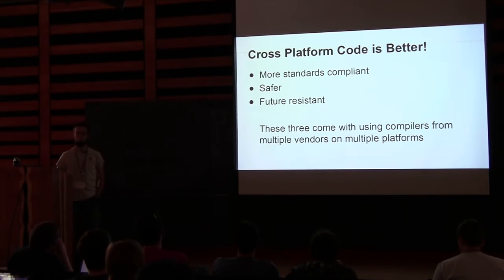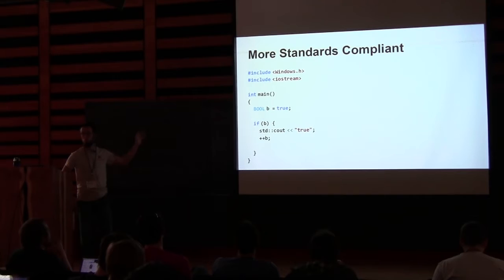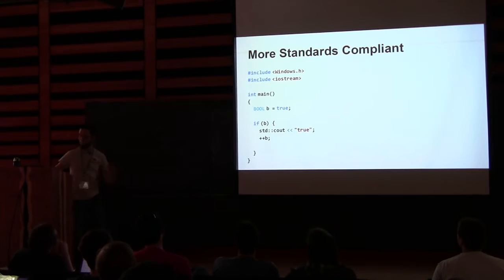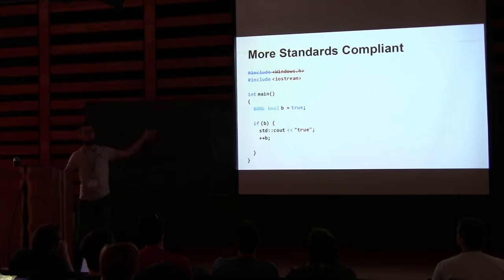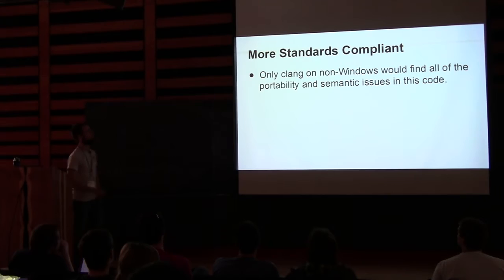More standards compliant — should be pretty obvious. Anyone want to point out portability issues here? Including Windows.h, using a capital Bool — those are the obvious things. But there's still an issue with this code that doesn't meet the current C++ standard: incrementing a bool with plus-plus. Only Clang will warn you on that if you turn the warnings all the way up: 'Incrementing expression of type bool is deprecated.' Only Clang on non-Windows specifically would find all those issues.